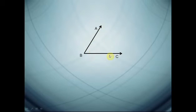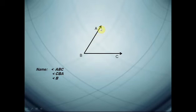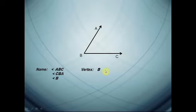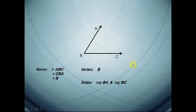For example, if I have this angle, how can we name it? We can name it angle ABC, or angle CBA, or we can name it by the vertex only — angle B. The vertex here is point B, which is the starting point of the two rays. Its sides are ray BA and ray BC.